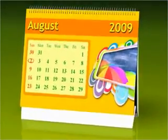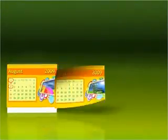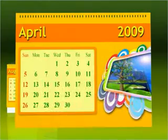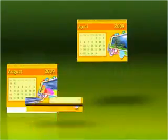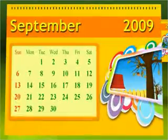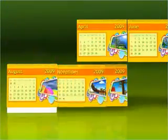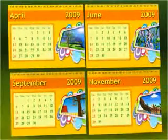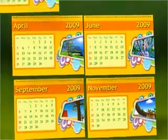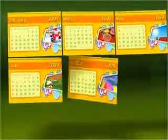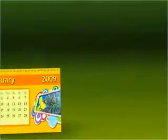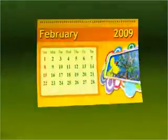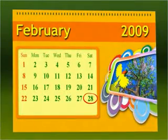A date in a calendar refers to a particular day. April, June, September, and November have 30 days, while the rest of the months have 31 days, except February.